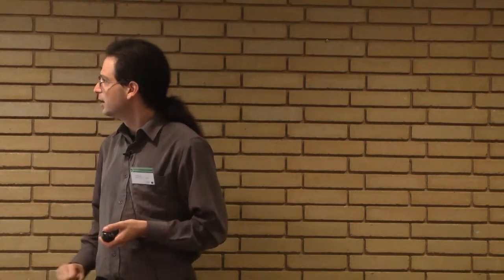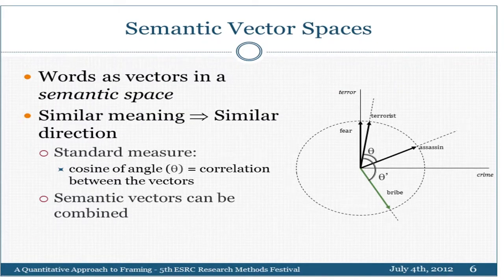The basic idea is that words similar to each other — that occur in similar topics — appear close together in that space. There are many different ways of generating this space; they all give roughly the same result. In a toy space I created for demonstration, we have two dimensions — one for terror and one for crime. Words pointing in similar directions are similar in meaning. For example, fear and terrorists are very similar. The standard measure is the cosine of the angle between vectors: terrorist and assassin have a smaller angle theta than terrorist and bribe, because terrorists don't bribe anybody.